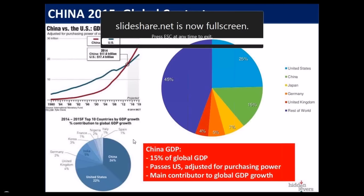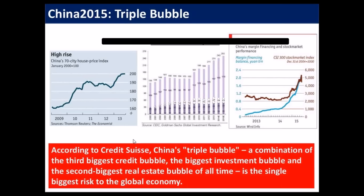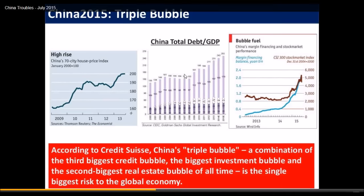In terms of our GDP being surpassed, we shouldn't feel too bad — for every one American, there are four Chinese people. If there's the same amount of output per capita, they should naturally have a much larger GDP. Right now, even if they're equals, we are consuming and producing about 4x the average Chinese person. Now let's look at why there's fear around China currently.